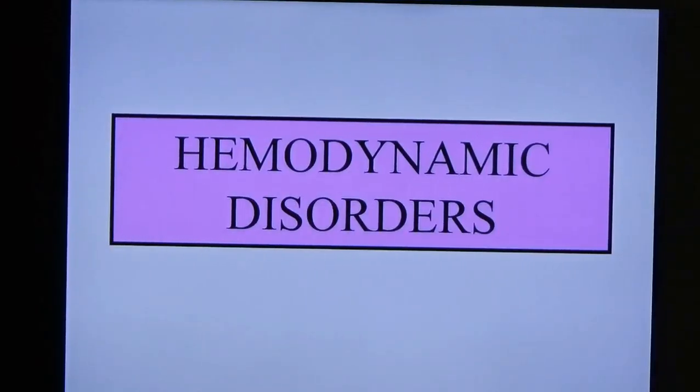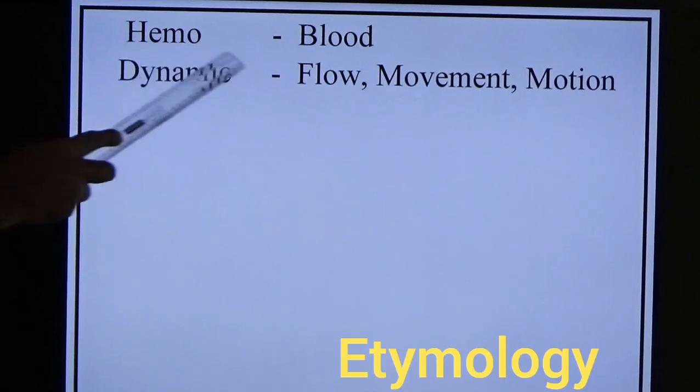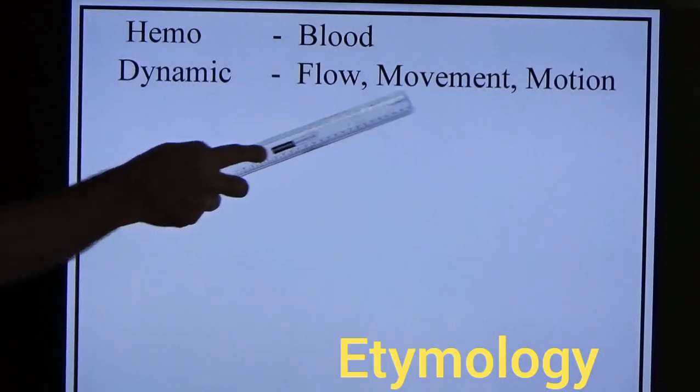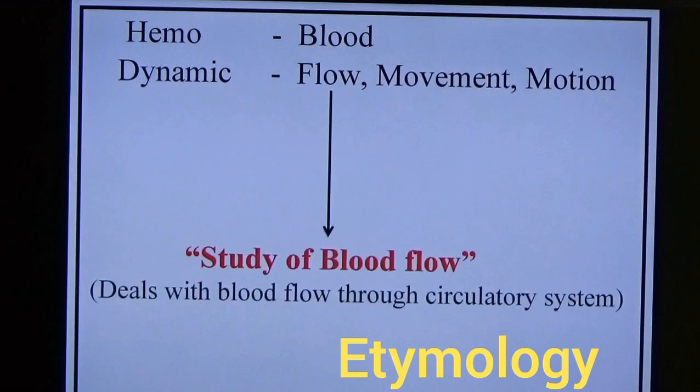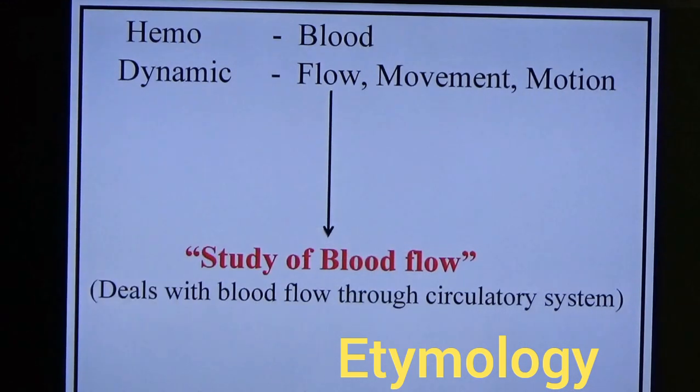Good morning. Today we will see a post on haemodynamic disorders. The word meaning of haemodynamics: 'haemo' means blood, 'dynamics' means flow or movement. So the definition is the study of blood flow — it deals with the blood flow through the circulatory system.